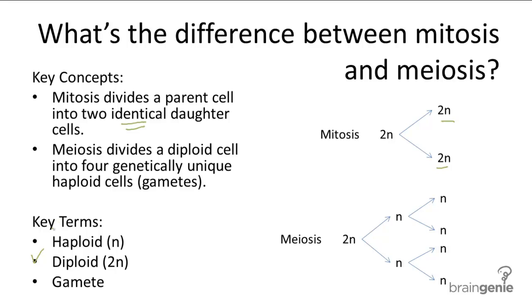whereas in meiotic cell division, a diploid cell is divided into four genetically unique haploid cells. These haploid cells are also called gametes, genetically unique gametes.